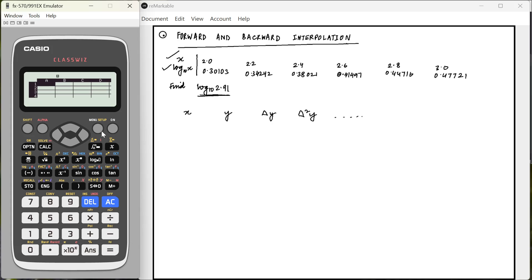We do not care about x here. Let us in the first column write the values of f of x. 0.30103, 0.34242, 0.38021, 0.41497, 0.44716, 0.47721. So our first column has six values.